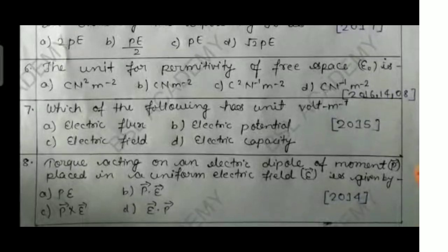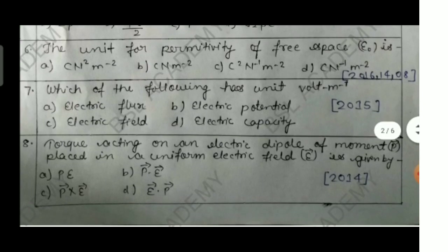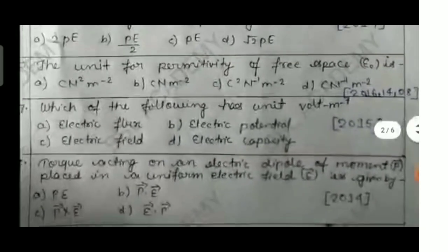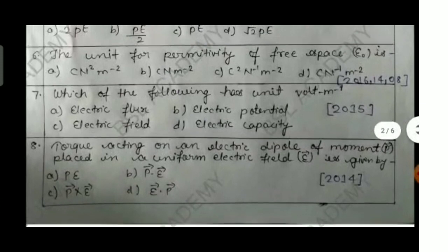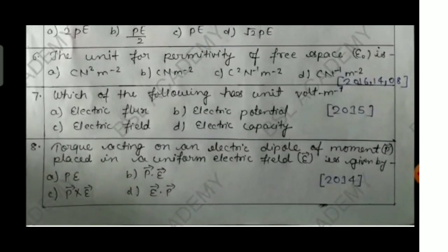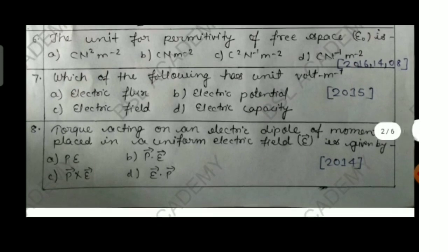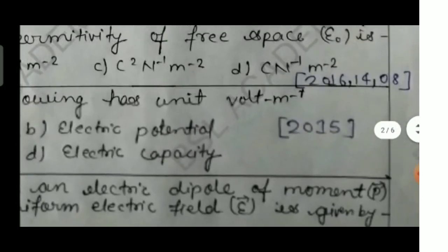Question six: the unit for permittivity of free space, epsilon naught, is — option A: coulomb·newton² per meter², option B: coulomb·newton per meter², option C: coulomb² per newton per meter², option D: coulomb per newton per meter². This was asked in 2007, 2016, 2014, and 2008, making it an important recurring question.